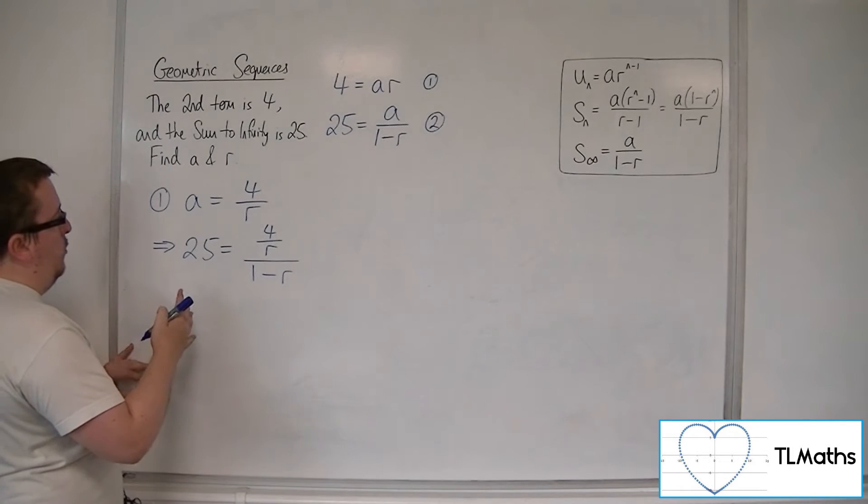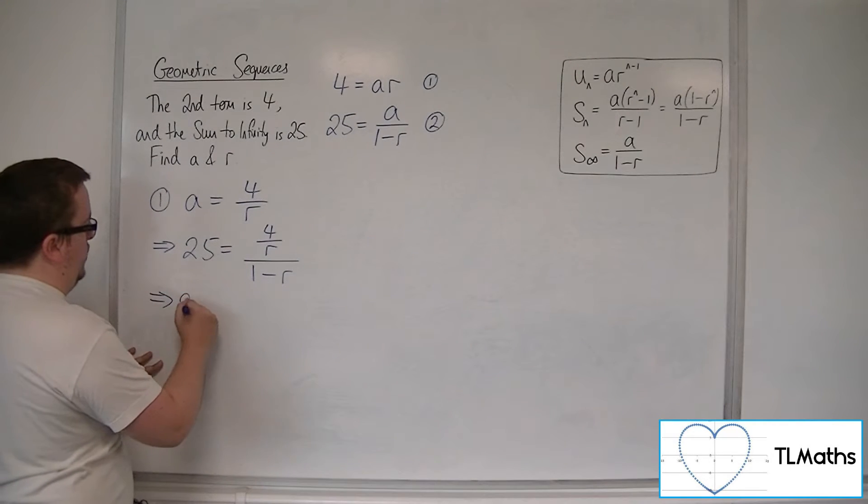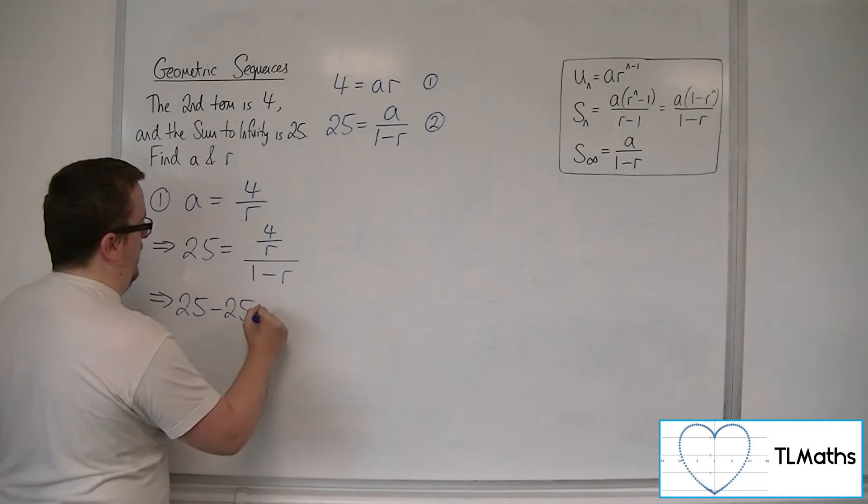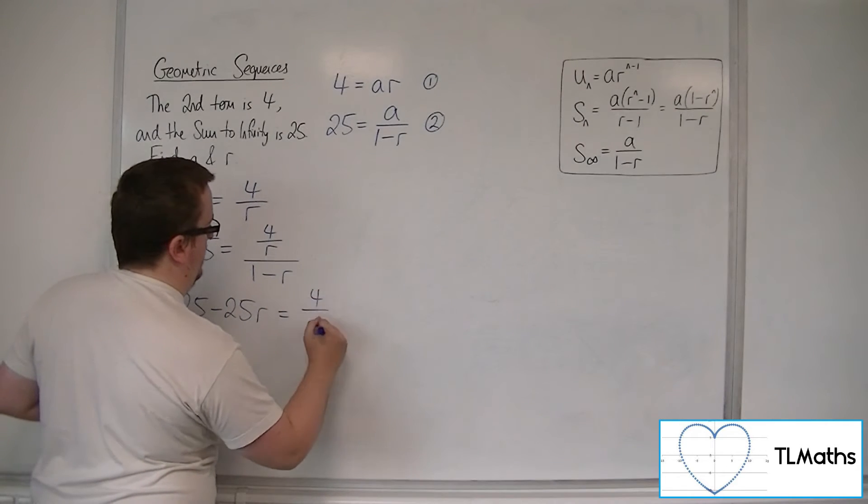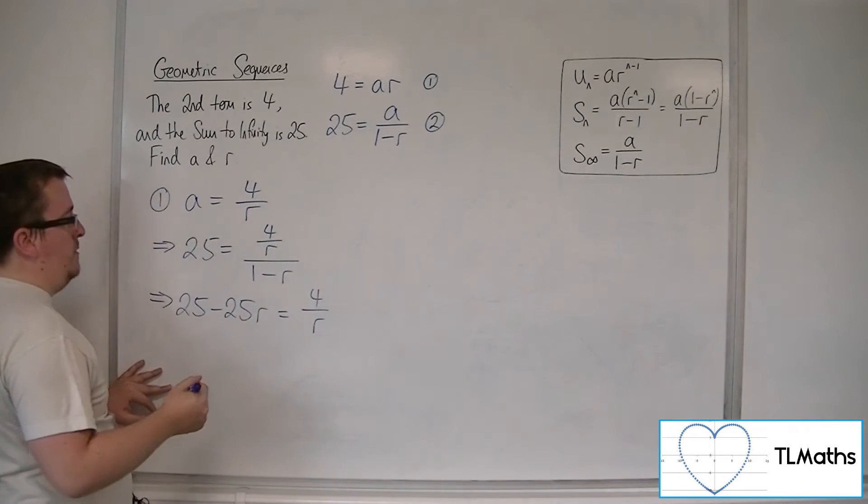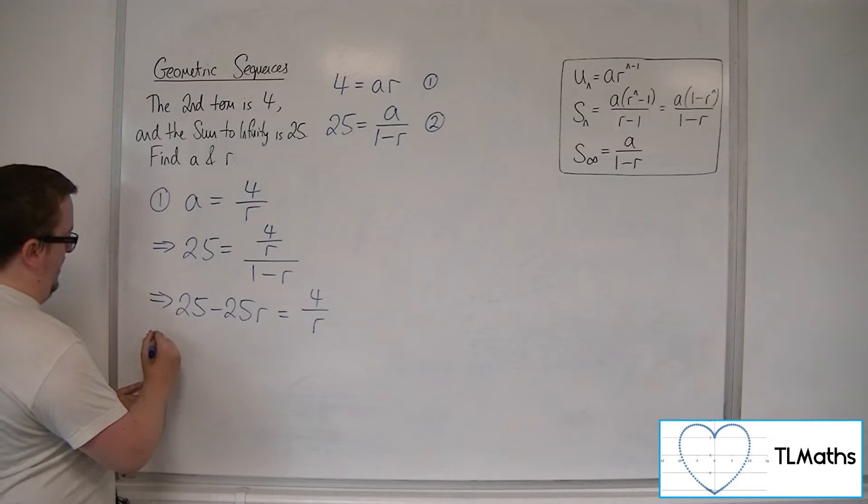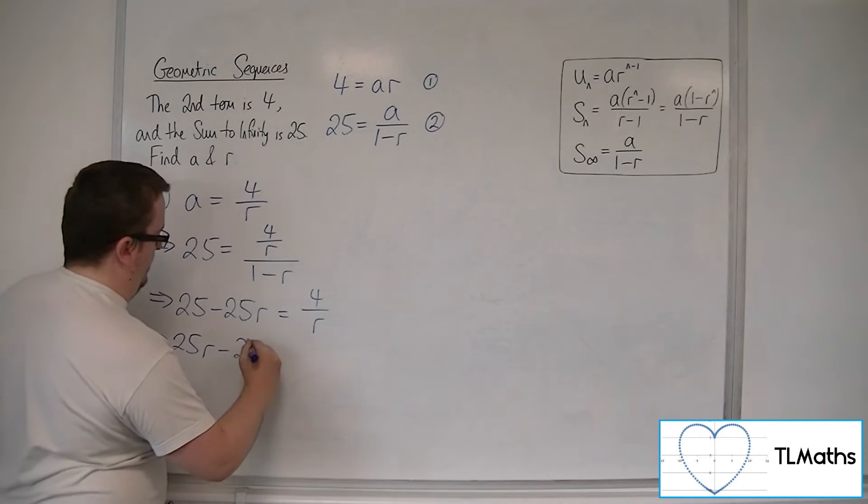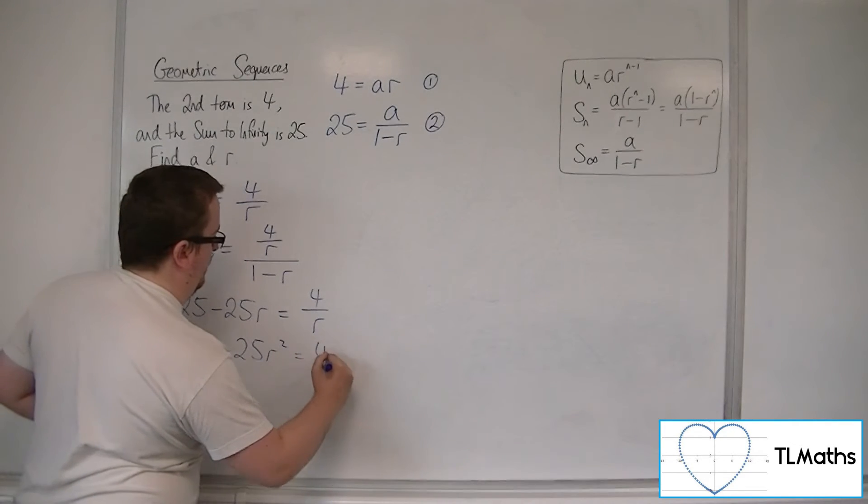So if I multiply both sides by the 1 minus r, we get 25 minus 25r is equal to 4 over r. Then you can multiply both sides by the r to get 25r minus 25r squared is equal to 4.